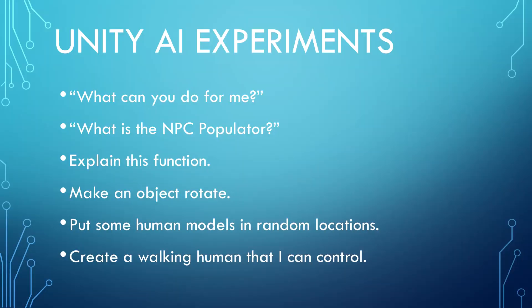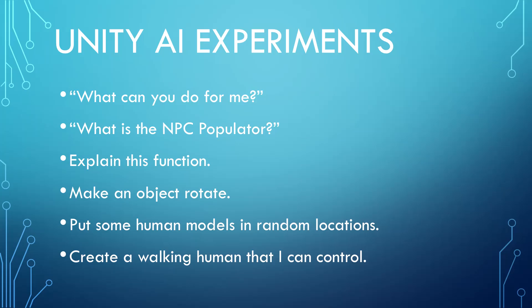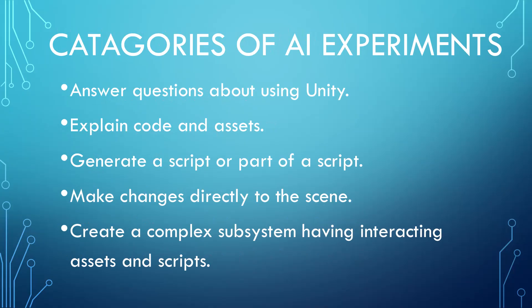Here is the list of experiments that I ran, which you can watch in the separate experiments video. These are six experiments out of many that could be possible. Hopefully they are a representative sample of different things we would hope AI could do. Here are my conclusions based on running the experiments. If you have questions about where these conclusions came from, please watch the experiments video.